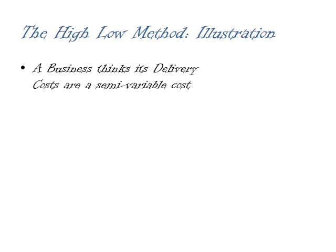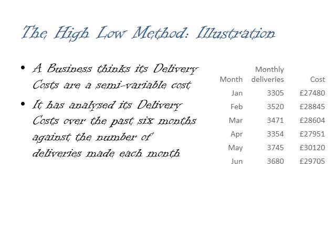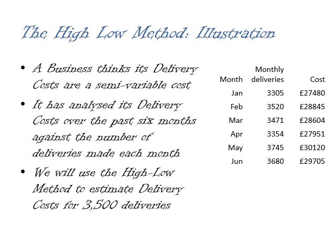A business thinks that its delivery costs are semi-variable costs, so it analyses its delivery costs over six months against the number of deliveries made each month. The number of deliveries is our units or output. I've got a table showing the different months, the number of monthly deliveries, and the associated costs. We're going to use the high-low method to establish what the fixed cost element and the variable cost element are, and then use it to estimate how much 3,500 deliveries in a month is going to cost.